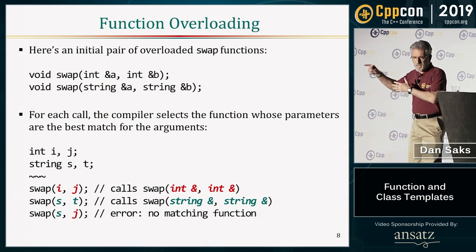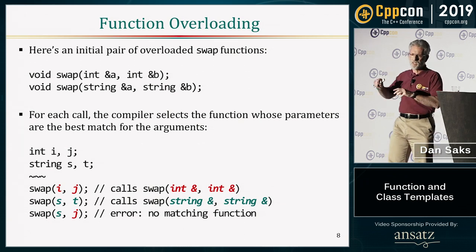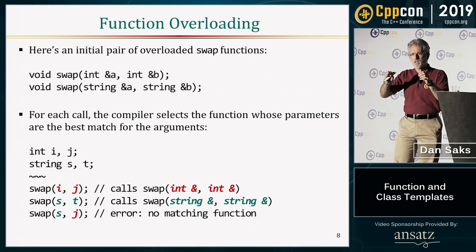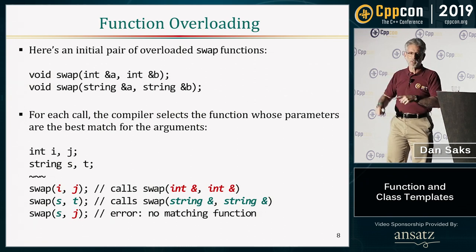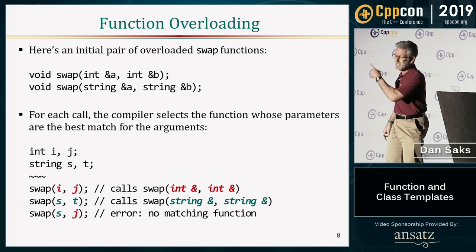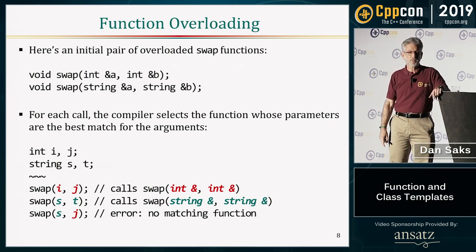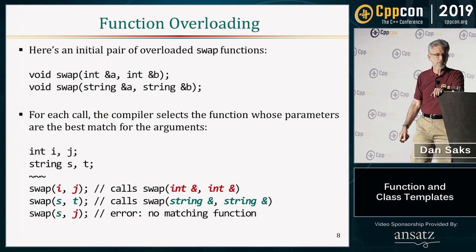In reality, function overloading doesn't require an exact match of the operand type to the parameter types — it will try some conversions, but not in this case, because the parameter types are references, and references are fairly unforgiving about what they will bind to.